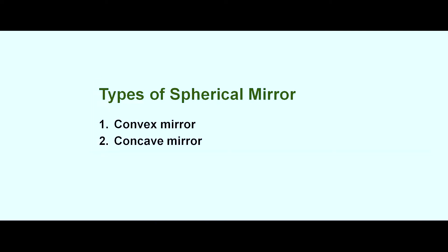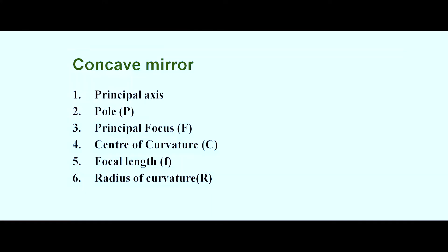Now let's look at the terms related to these mirrors one by one. I have already shown you during the construction of the mirror. We have around six terms here: the principal axis, the pole, principal focus, center of curvature, focal length F, and the radius of curvature R.